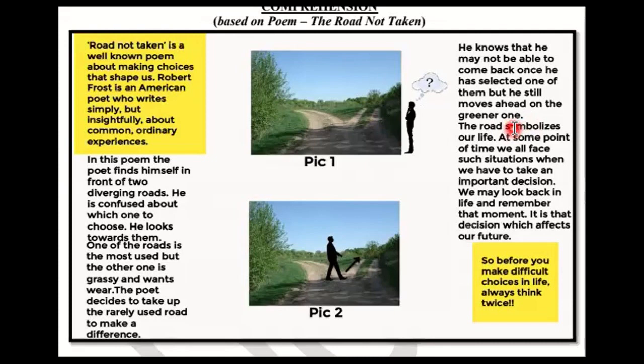Because in life, when we make a decision and take one path, we leave the other path behind. It may not be possible to come back to that same path. Robert Frost has said that if he had gone back along the path he originally chose, he had not yet reached that point.